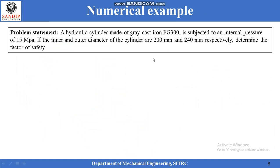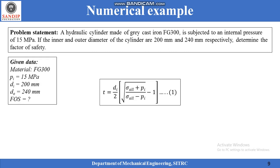In order to understand these concepts, let us solve one numerical example. A hydraulic cylinder made of grey cast iron FG300 is subjected to an internal pressure of 15 MPa. The inner and outer diameters of the cylinder are 200 mm and 240 mm respectively. Determine the factor of safety.